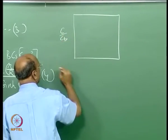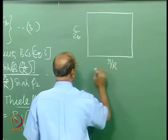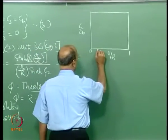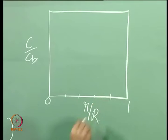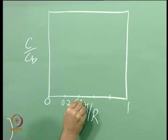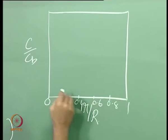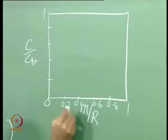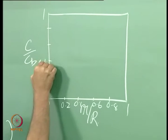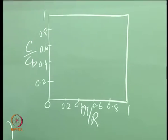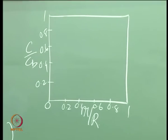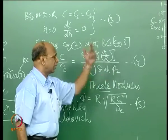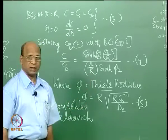We can plot C/C_B versus r/R. The advantage of dimensionless variables is that the parameter is only φ. If φ is very small, how does the curve look? We start at r/R = 1, C/C_B = 1, and the curve shows how concentration varies inside the particle.